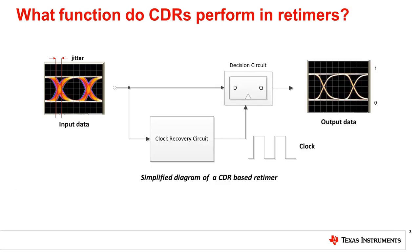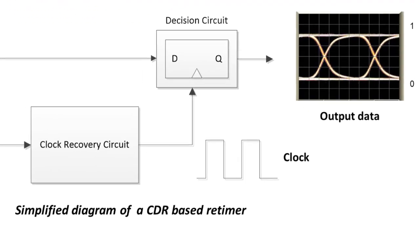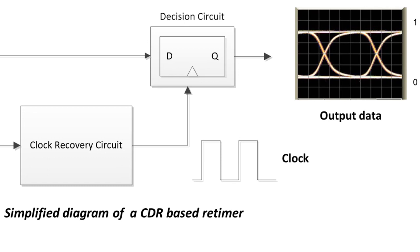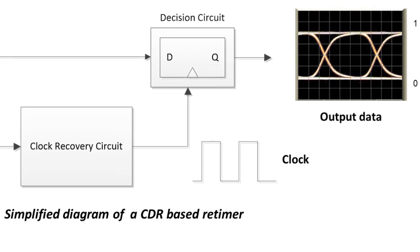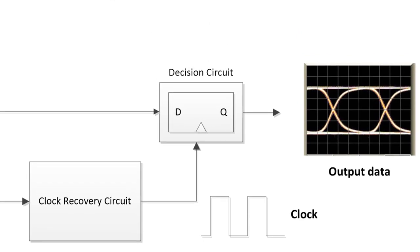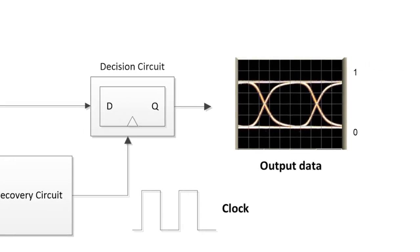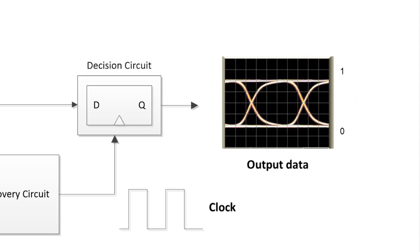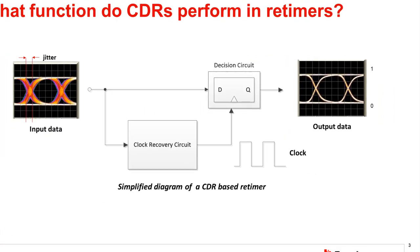What function do CDRs perform in retimers? The retimer uses its CDR to sense the input data and produce a periodic and synchronized clock. This clock, recovered from the data, is then used by a sampler decision circuit. The sampler outputs a 1 or a 0, depending on its input voltage level, and its sampling of the input data is clocked by the CDR. This retiming function using a clean recovered clock allows the output to reproduce the input data, but with much less jitter. The retimer thus allows the system to reset the jitter budget for a given data link.